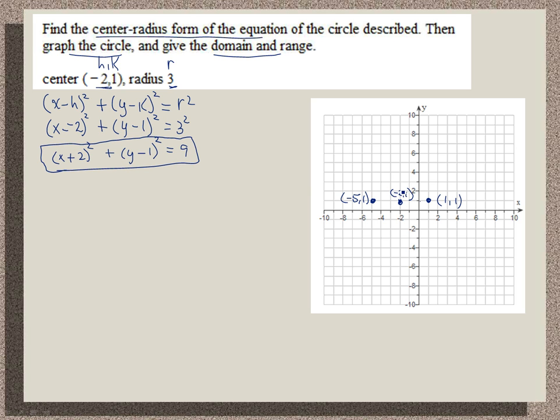From the center, I want to go 3 units up. It gives me a y value of 4. Negative 2, 4. And from the center, go 3 units down. The y value becomes negative 2. So I get negative 2, negative 2.